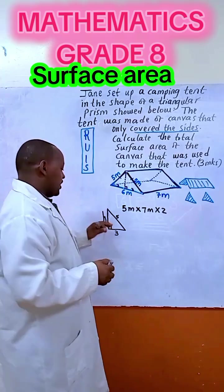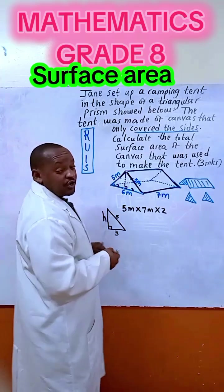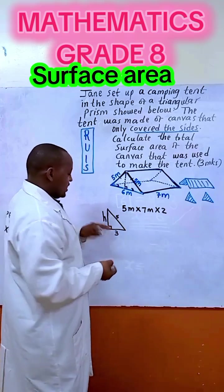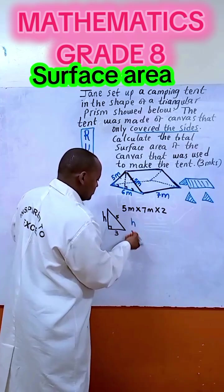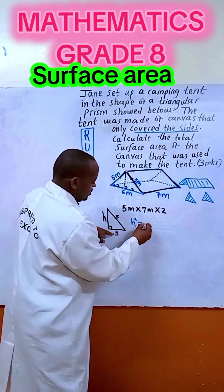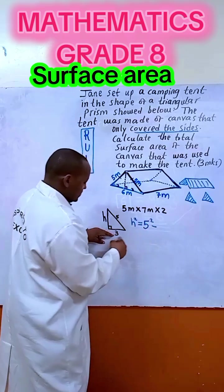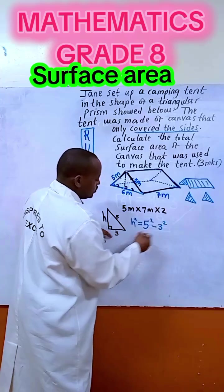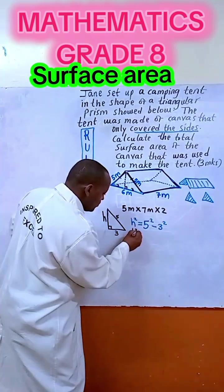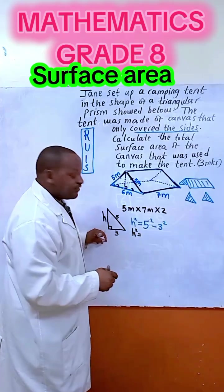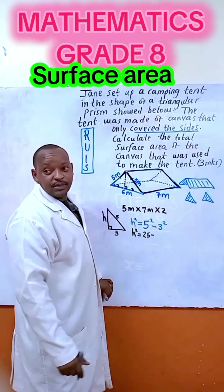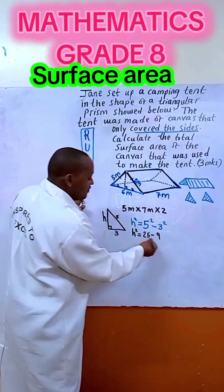So what are we going to do? This is Pythagoras theorem. So Pythagoras says h squared equals to 5 squared minus 3 squared. So let us work out here. So h squared will be equal to 5 squared is 25, minus 3 squared, 3 times 3 is 9. So 25 minus 9.